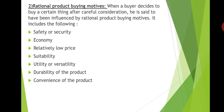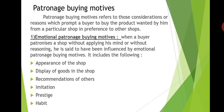Convenience of the product: many products are bought by people because they are more convenient. For instance, automobiles, automatic watches, and gas stoves are bought by people because of the convenience they provide. This is about rational product buying motive.